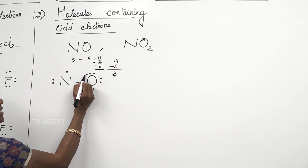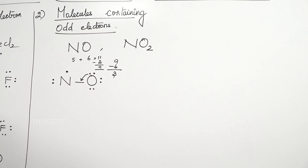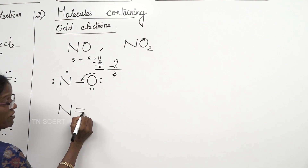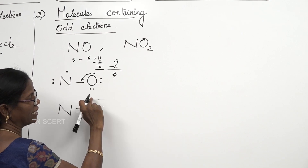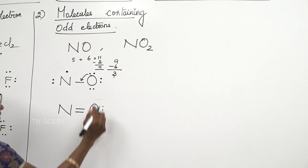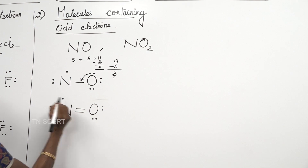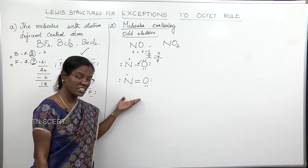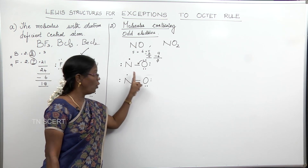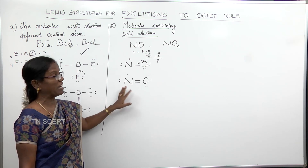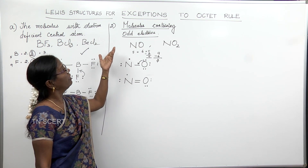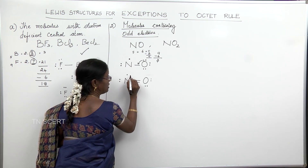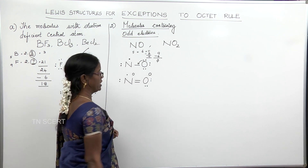We shift 2 electrons to form a triple bond structure so that both atoms approach octet configuration. The final Lewis structure of nitric oxide shows nitrogen with only 7 electrons, not 8, making it an exception to the octet rule. The formal charges for both nitrogen and oxygen in this structure are 0.